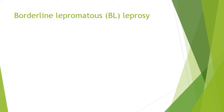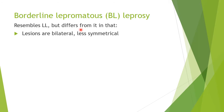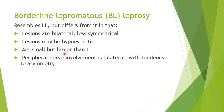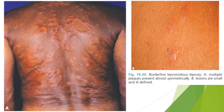Borderline lepromatous leprosy resembles lepromatous leprosy but differs in that lesions are bilateral and less symmetrical — lepromatous leprosy is usually very symmetrical. Lesions may be hypoesthetic, and they are small but larger than those of lepromatous leprosy. Peripheral nerve involvement is bilateral with a tendency toward asymmetry. The lesions are small and ill-defined, appearing almost symmetrically distributed.